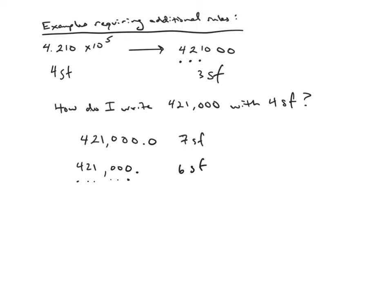What you'll see done with large numbers that have trailing zeros — if you need one of those zeros to be significant — is to write a line over the zero that you know is significant. So 421,000 with a line over the first zero after the 1 would have four significant figures: the 4, 2, 1, and that overlined zero all count. If the line is over the second zero, then five are significant. You don't see it too often, but if you see a line written over a zero, that means that zero counts.